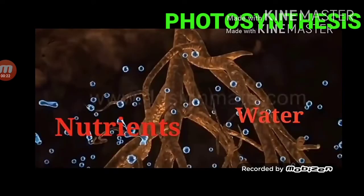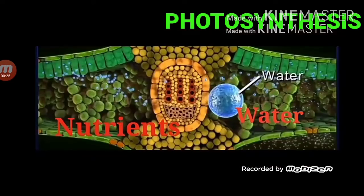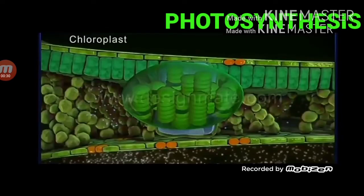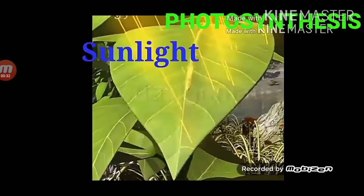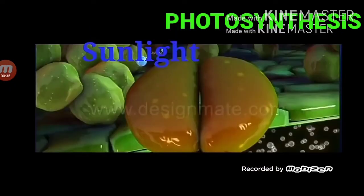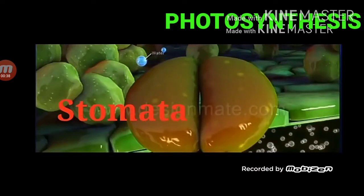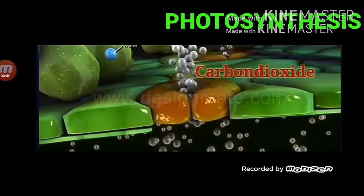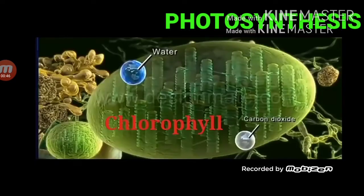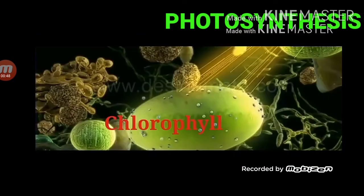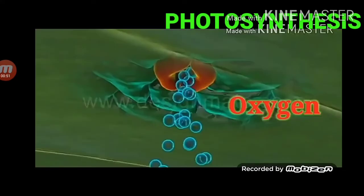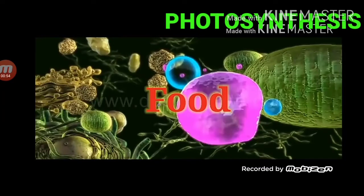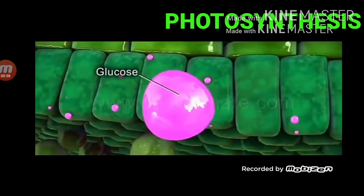Water and nutrients are transported to chlorophyll in the leaves through transport vessels to produce food. When sunlight falls on the leaves of plants, the tiny pores present on the leaves called stomata open, through which carbon dioxide gas is taken in. With the help of water and carbon dioxide, glucose — that is, food — is produced in the chlorophyll, and oxygen is released out through stomata.